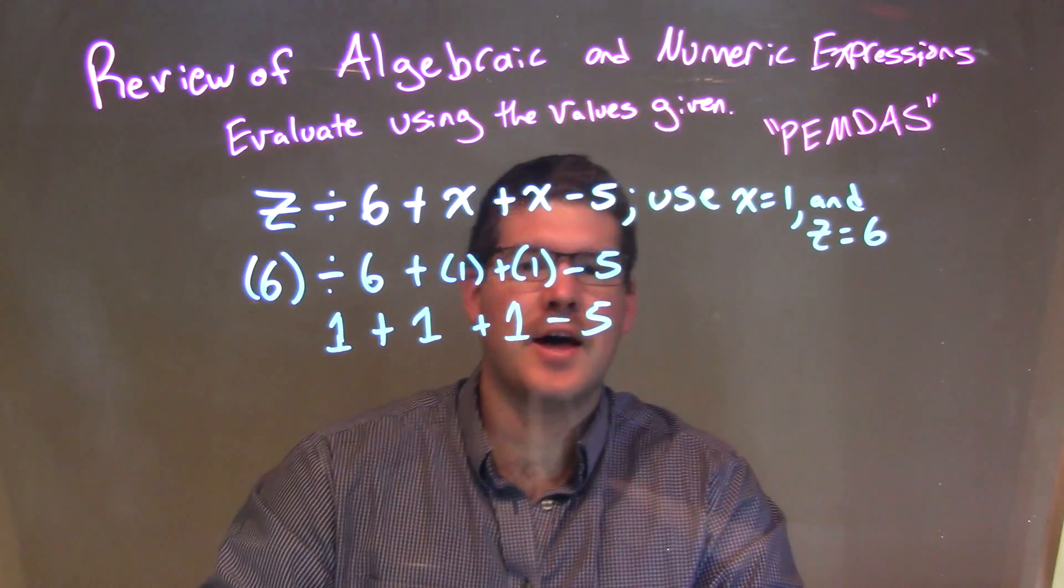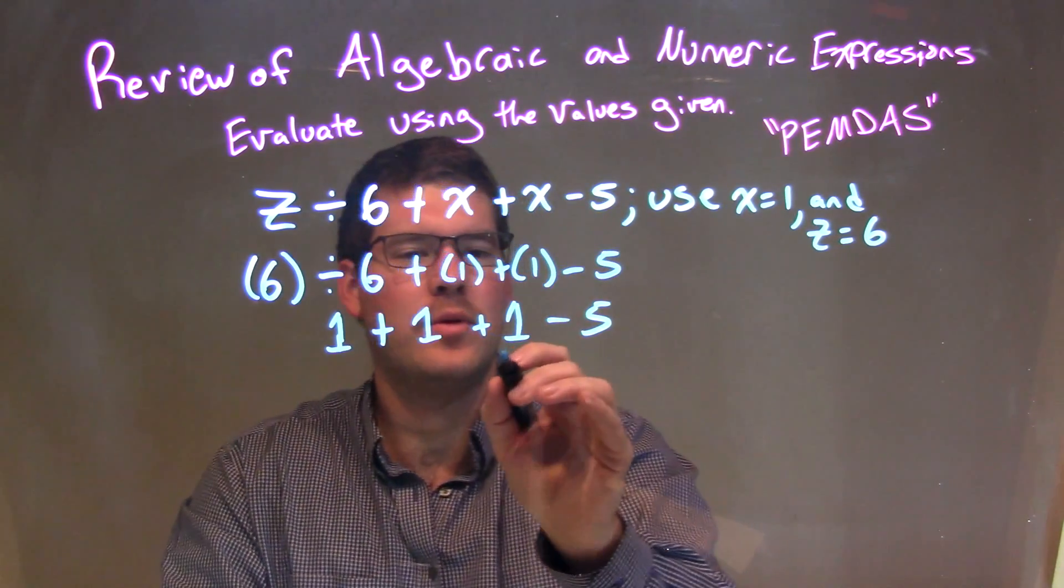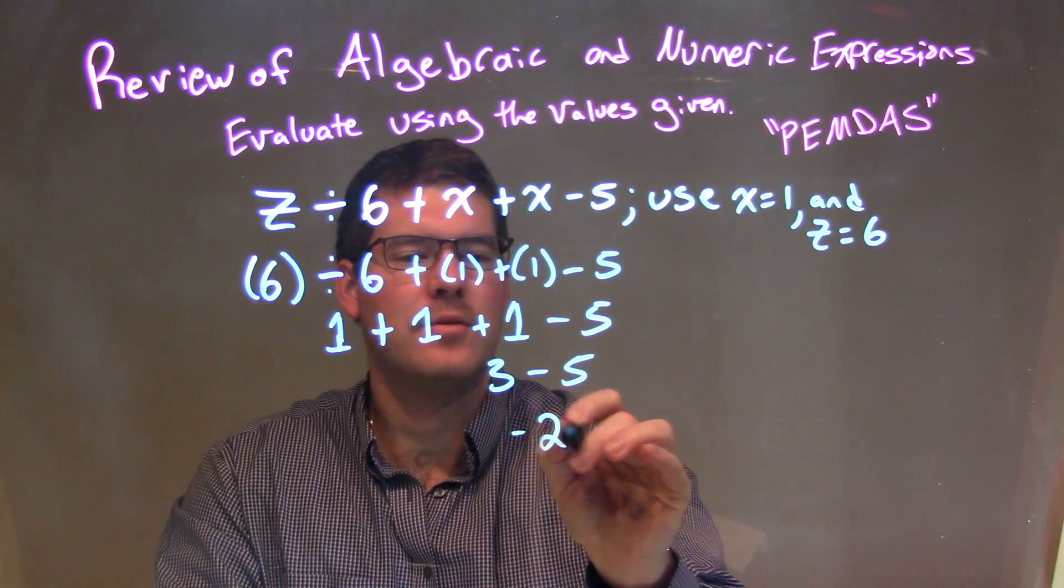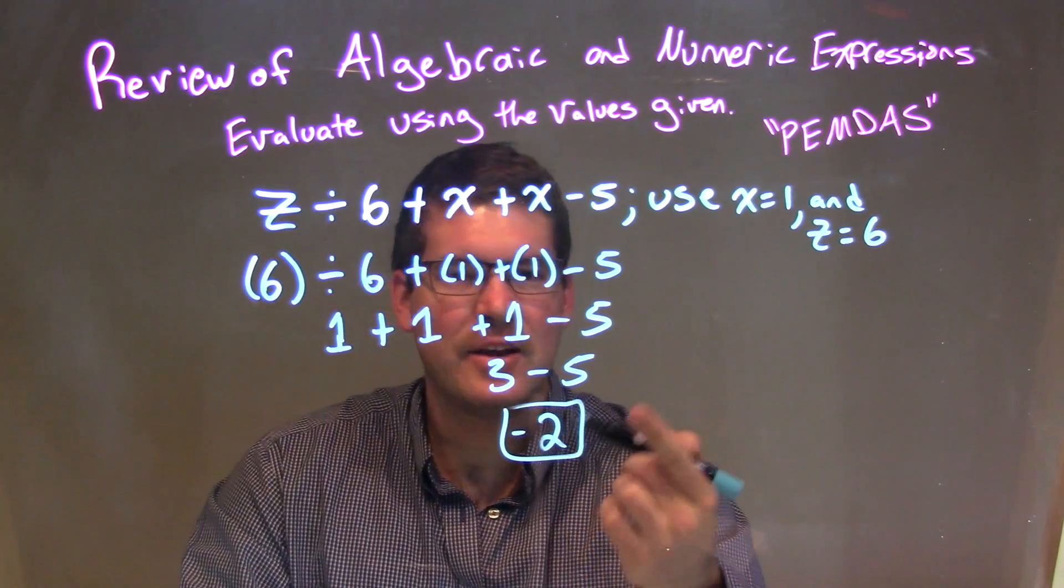So now it's just addition, let's add them together. 1 plus 1 plus 1 is pretty easy, that's 3, right? So 3 minus 5 and 3 minus 5 is a negative 2. And so our final answer here is just negative 2.